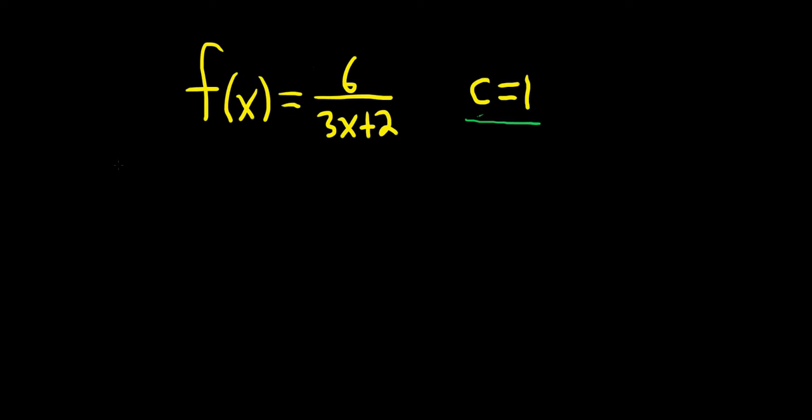The formula we're going to use in this problem is the following. If we have 1 over 1 minus x, this is equal to the infinite sum as n runs from 0 to infinity of x to the n. And this is true if the absolute value of x is less than 1.